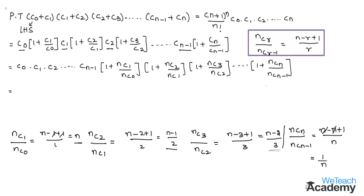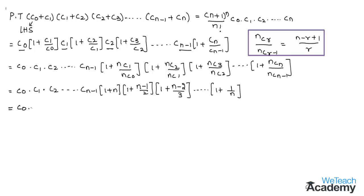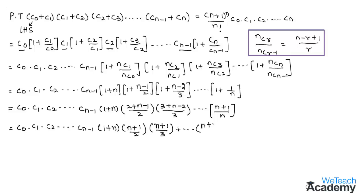Replacing all these values in the expression, we get c0 into c1 into c2 ... cn-1 into (1 + n) into (1 + (n-1)/2) into (1 + (n-2)/3) ... into (1 + 1/n). This simplifies to c0 into c1 into c2 ... cn-1 into (n+1)/1 into (n+1)/2 into (n+1)/3 ... into (n+1)/n.